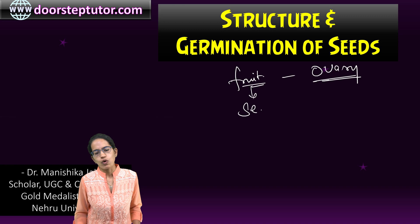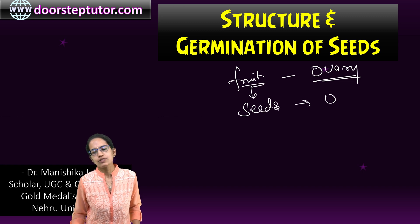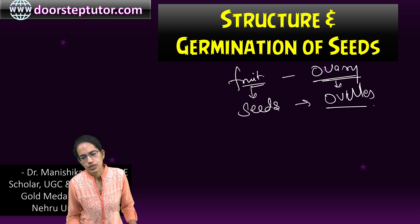It comes from ovary. Now within the fruit we find what? Seeds. These seeds are formed by ovules, now ovules are present within the ovary.